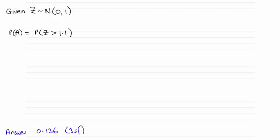what I'd want to do is just sketch the standardised normal distribution, Z following a normal distribution with a mean of 0 and a variance of 1.